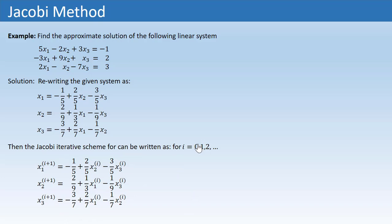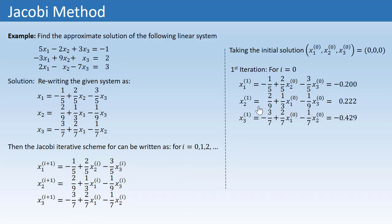For I=0, we get the solution expressions for the first approximate solution. On the right-hand side we need X1⁰, X2⁰, and X3⁰ — the initial solution. If we assume the initial solution is (0, 0, 0), then the first approximate solution is computed as −0.200, 0.222, −0.429, rounded to three decimal places.